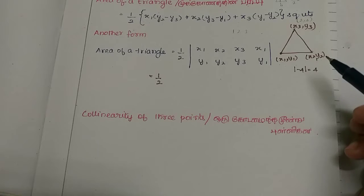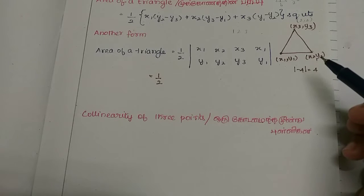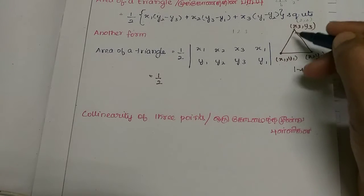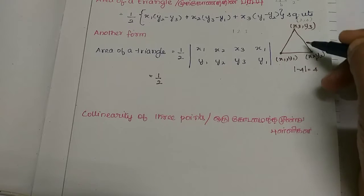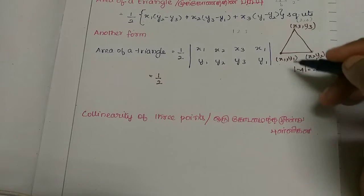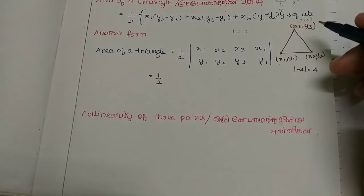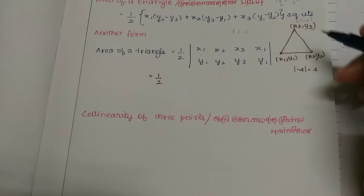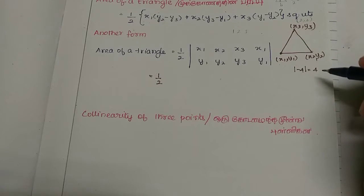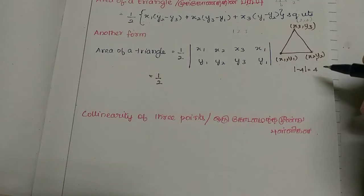The area of anything — area of a square or area of a triangle — represents space. There is no negative space, so that is why the area of the triangle cannot be minus. That is why we use the modulus.